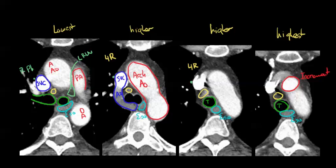The SVC is now splitting — superior vena cava — starting to split into the brachiocephalic on the left, so this is the left brachiocephalic, and this is going to become the right brachiocephalic. You still have your mammaries right up in here, riding right next to the sternum.